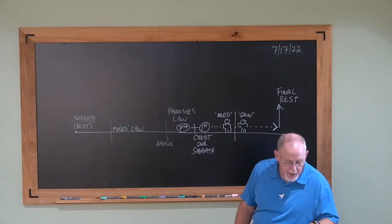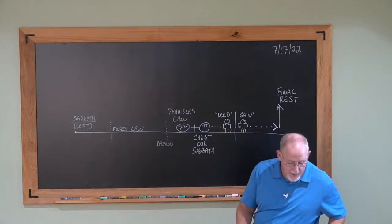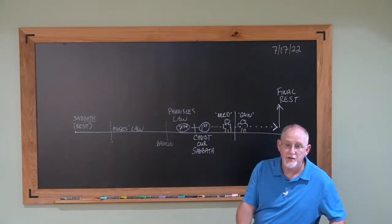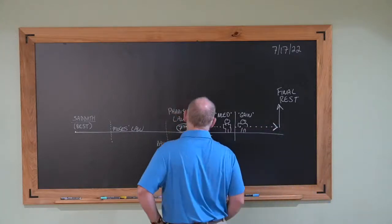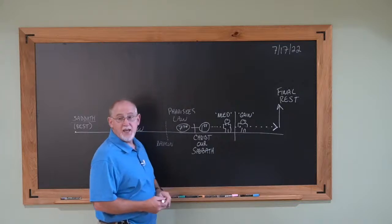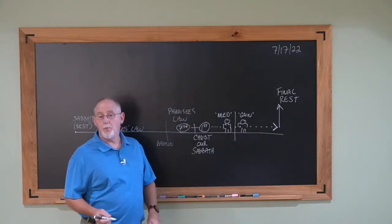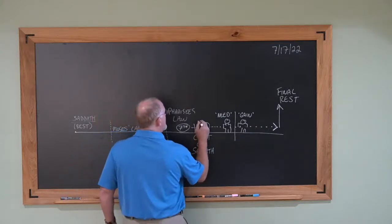And came to the Ancient of Days, and they brought him near to him, and there was given him dominion, and glory, and a kingdom, that all people, nations, languages should serve him. His dominion is an everlasting dominion, which shall not pass away. When did Christ come before the Ancient of Days and receive a kingdom? When he ascended up.